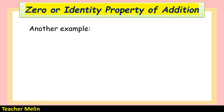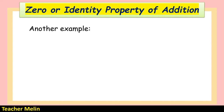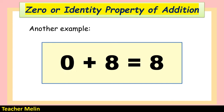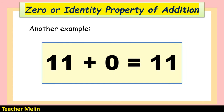Here are some examples of the zero or identity property of addition: 47 plus 0 equals 47; 0 plus 8 equals 8; 20 plus 0 equals 20; and 11 plus 0 equals 11.